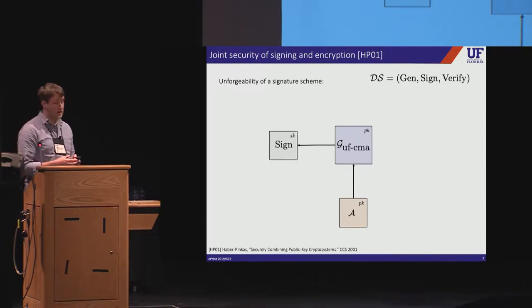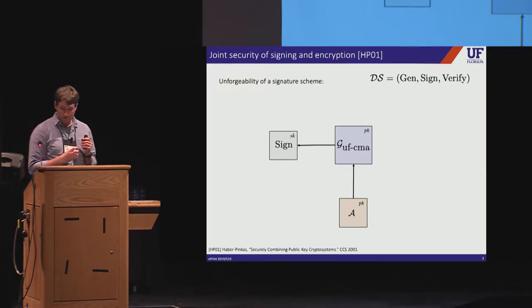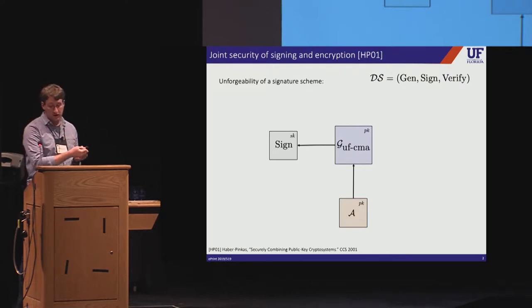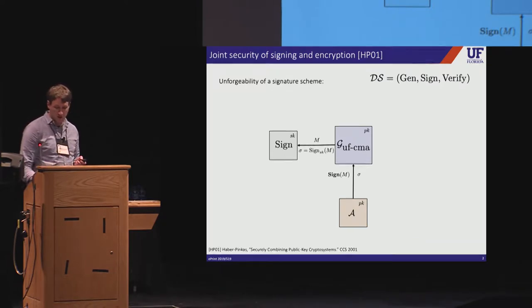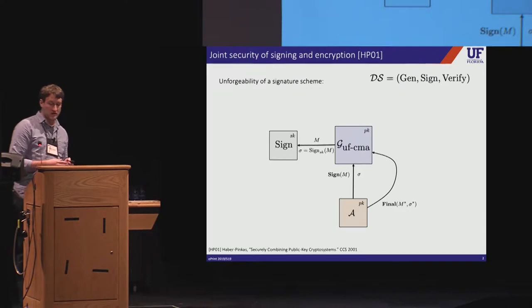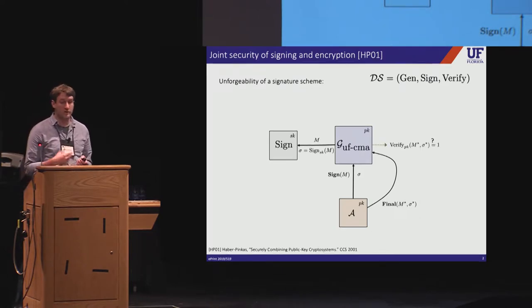So let's take a look at how they defined security for signature schemes. So the usual experiment starts by running the key generator and handing the public key to the adversary. You'll notice here that I've drawn the signing algorithm as an object that the game makes queries to for performing computations that involve the secret key. So once the adversary has the public key, we execute it with access to the oracles defined by the game. So one of these oracles allows the adversary to sign a message of its choosing. And so the game just relays these queries and then relays the response back to the adversary.